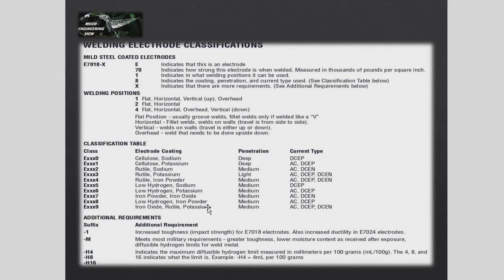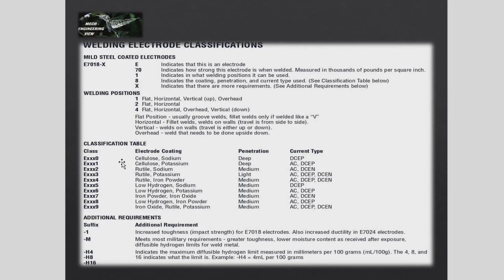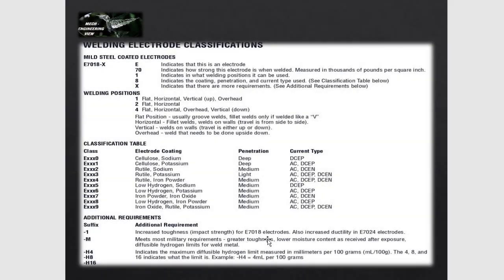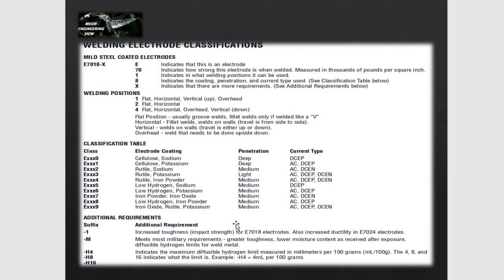Now, the suffix — that is an additional requirement. For example, 7018-1: '1' means increased toughness, that is impact strength. If I have low temperature material, I look at the impact strength — 27 joules, 40 joules, 50 joules — at minus 10 or minus 20 degrees. That is the additional requirement. If the result meets the requirement, you can choose this electrode.